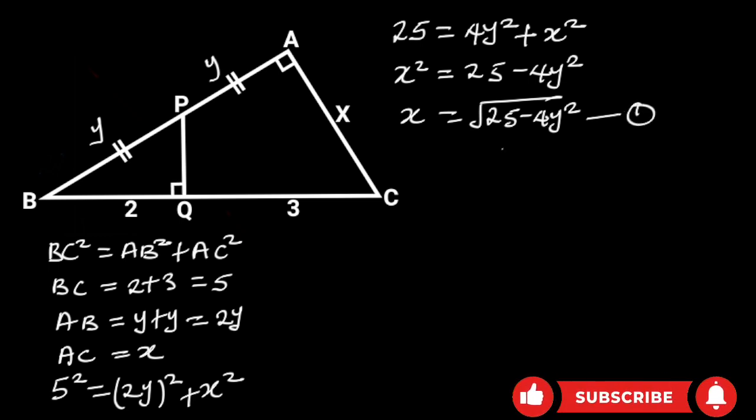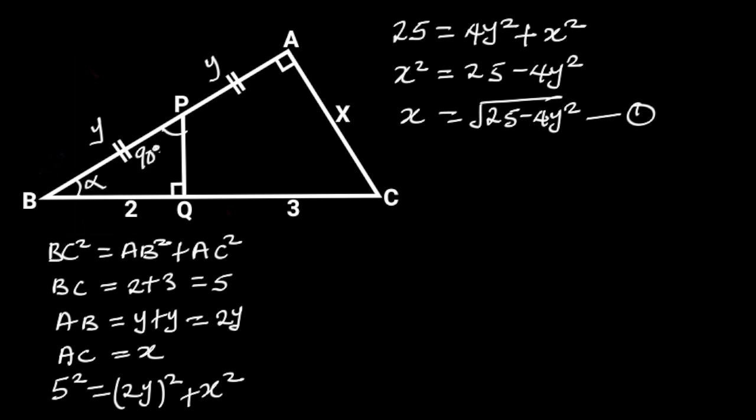Next, let's focus on triangle BPQ. Triangle BPQ is a right triangle. If we call this angle alpha, then the remaining angle of this triangle will be 90 degrees minus alpha. Reason: The sum of angles in a triangle is 180 degrees. Next, let's consider triangle ABC. Notice that triangle ABC is sharing the same angle with triangle BPQ, which we have taken as alpha. Since triangle ABC is a right triangle, then the remaining angle will be 90 degrees minus alpha.